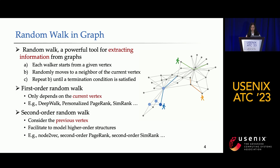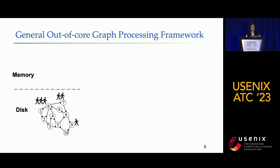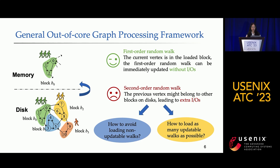As we all know, graphs with billions of edges are becoming more prevalent in many domains, and the graph size exceeds the memory capacity of a single machine. So many out-of-core graph processing systems have been proposed to make it cheaper and easier to analyze large graphs and massive random walks over a single machine. These systems divide a graph into several blocks and store them on disk. During the random walk procedure, a block is loaded from disk into memory according to a scheduling model.